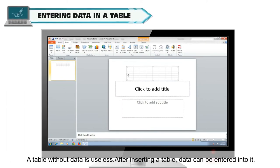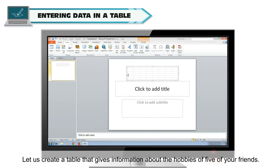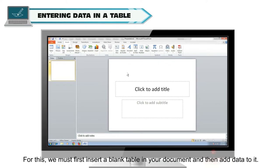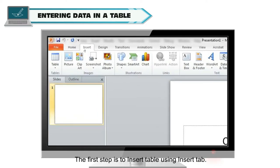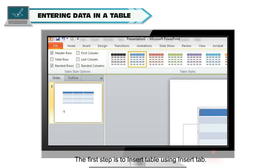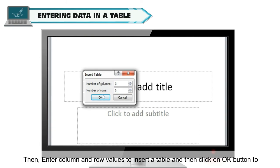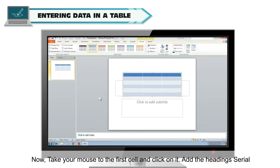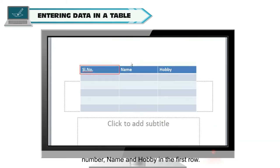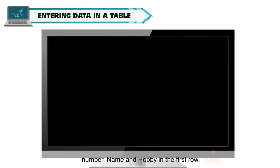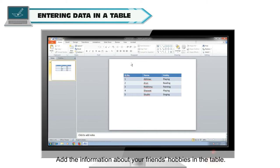A table without data is useless. After inserting a table, data can be entered into it. Let us create a table that gives information about the hobbies of five of your friends. For this, we must first insert a blank table in your document and then add data to it. The first step is to insert a table using the Insert tab. Then, enter column and row values and click OK to insert the table. Take your mouse to the first cell and click on it. Add the headings serial number, name, and hobby in the first row, then add the information about your friends' hobbies in the table.